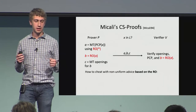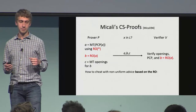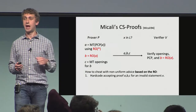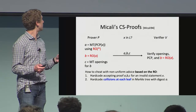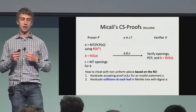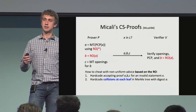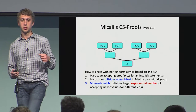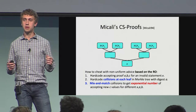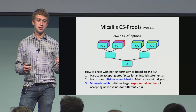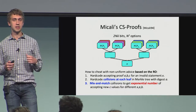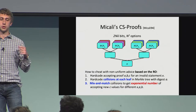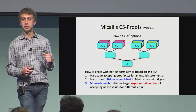How do we cheat in this protocol with advice based on the random oracle? The first step, as we saw in general, is to just hard-code an accepting proof for any invalid statement. Next, we can look at the Merkle tree and hard-code collisions at each leaf that lead to the same digest A. We can then mix and match these collisions to get an exponential number of openings. Specifically, if we can open the first block in N different ways and the second block in N different ways, we get a quadratic number of options by mixing and matching. Continuing throughout the whole PCP proof, we get an exponential number of ways to open to the same digest A, which we use to cheat on many different statements.